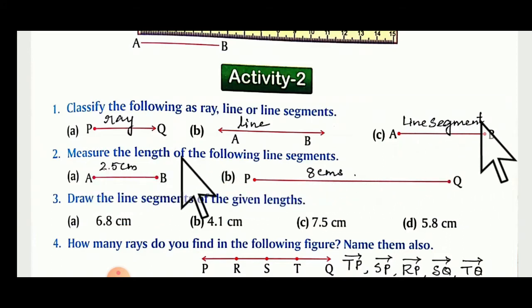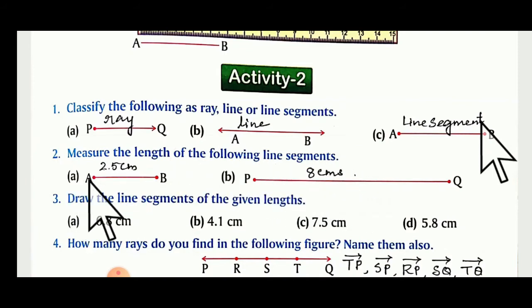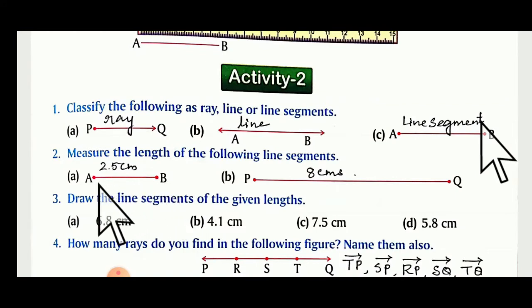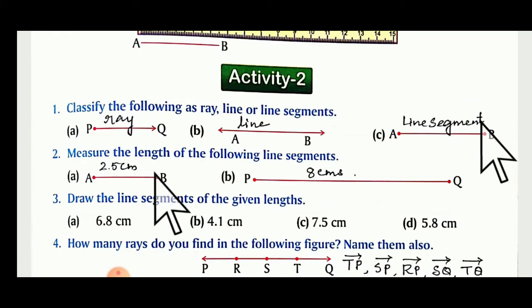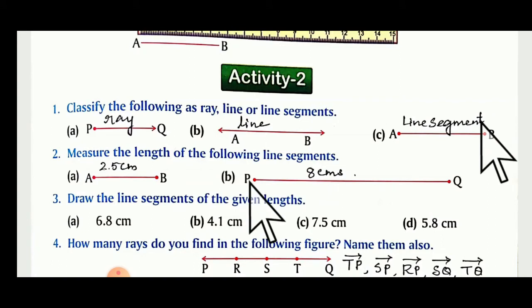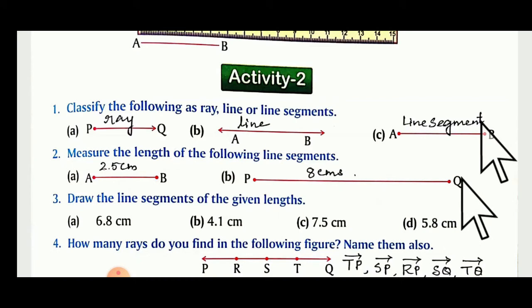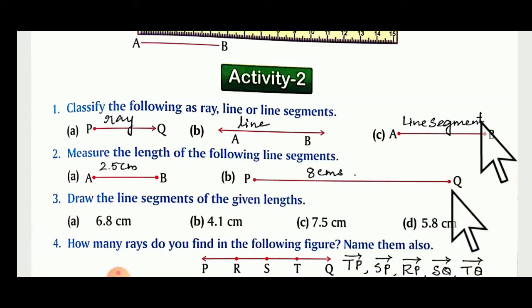Measure the length of the following line segments. For line AB: use the ruler, begin with 0 and read to where B ends — it is 2.5 centimetres. For line PQ: begin with 0 and see where it ends — it is 8 centimetres.